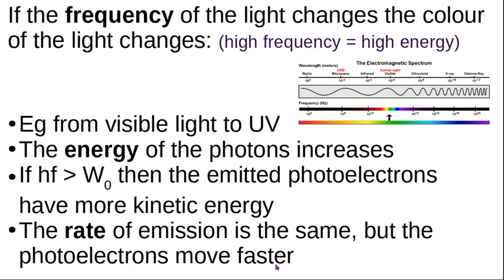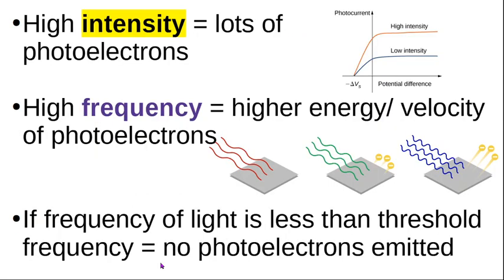You are not going to pop more electrons off per second — the rate of emitting electrons is the same — but they will be very fast. It's like counting five Formula One cars in a second versus counting five bicycles in a second. Five electrons pass you either way, but with very high frequency light they'll be Formula One photoelectrons, not bicycle photoelectrons. In summary: high intensity means a lot of photoelectrons and a bigger photocurrent; higher frequency means faster electrons. If the light doesn't have enough energy, nothing happens — no photoelectrons are emitted.